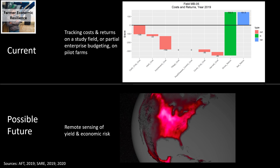Also, recent research has documented the benefits of soil health and regenerative practices on yield and yield stability in the face of adverse weather. In the future, we can potentially assess yield stability through satellite imagery, which would allow us to better understand the link between farm management and resilience.